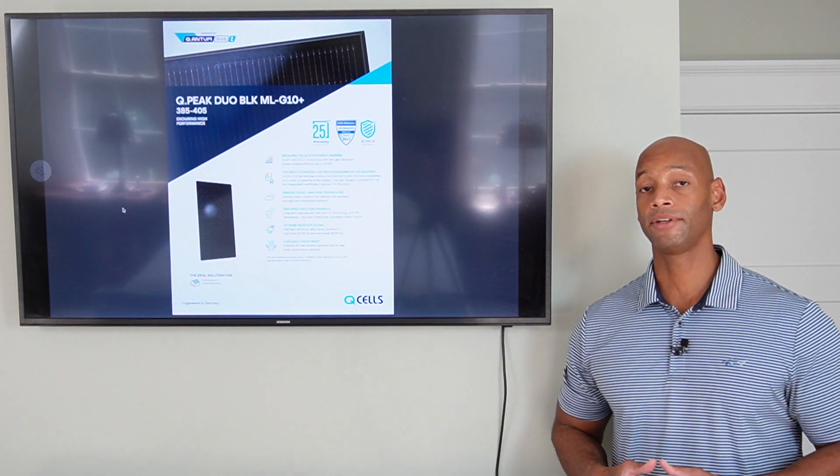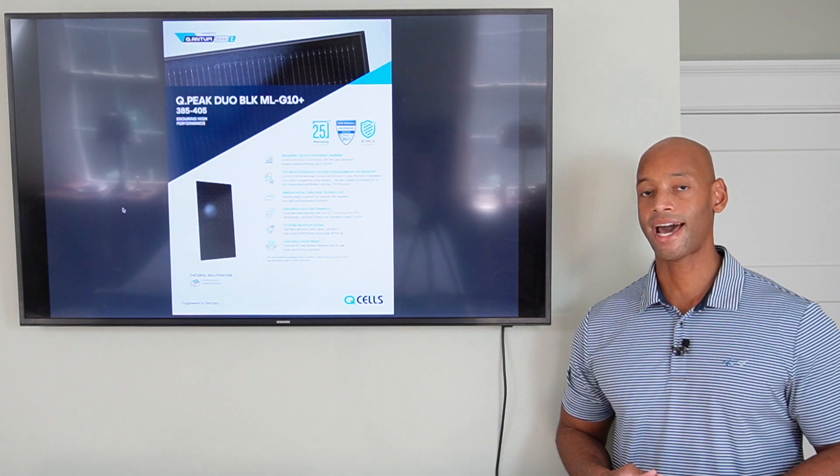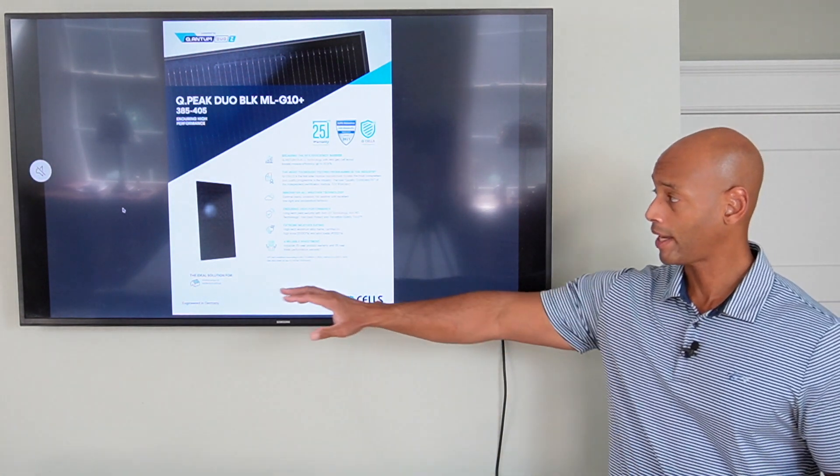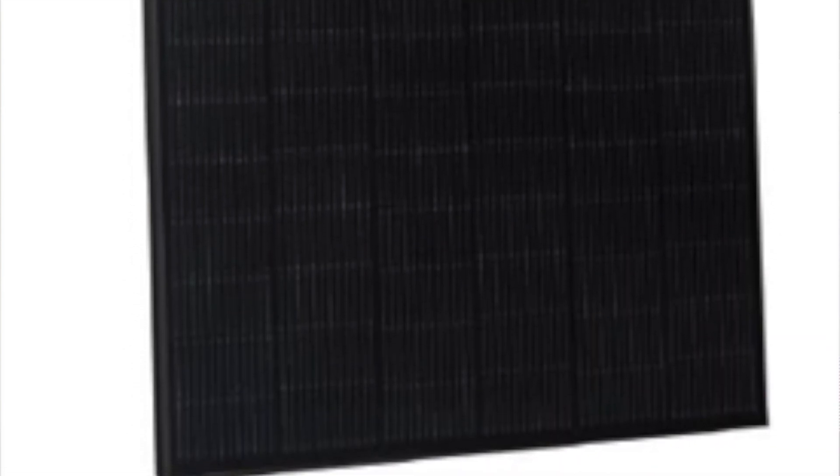Instead of having 66 individual cells, it actually uses 132 half cells. If you look up close at the panel, you'll see that the panel is separated into an upper section and a lower section. And those two sections of the solar panel actually operate independently of one another.